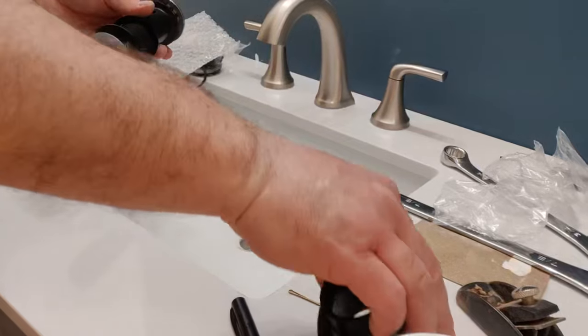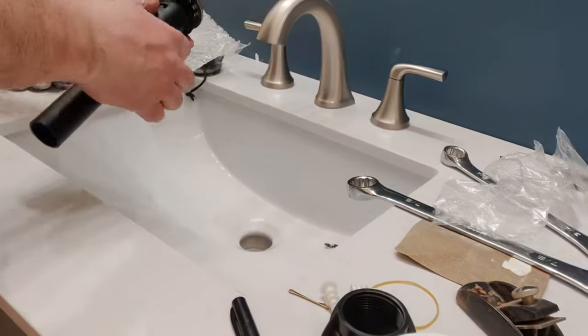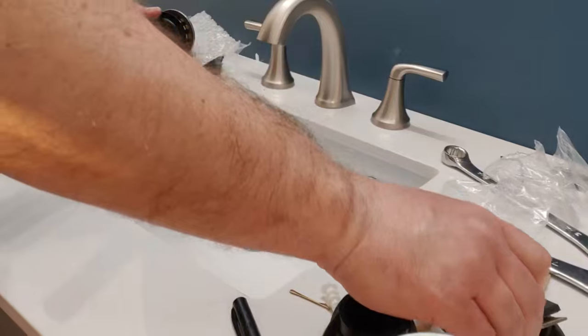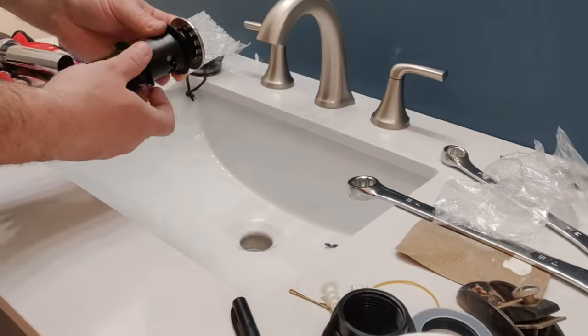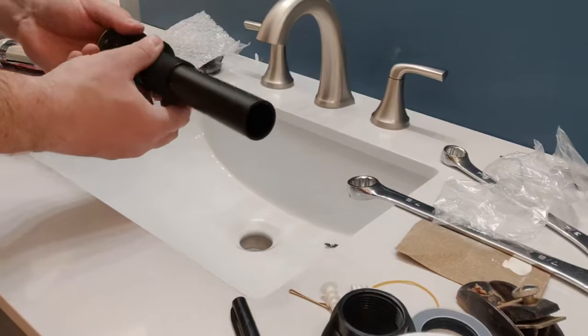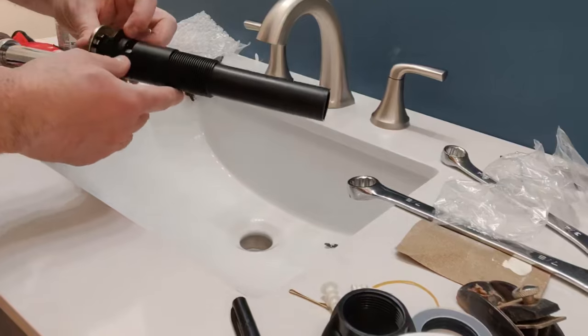Next we're going to install our drain. First we're going to remove all the pieces from the drain assembly except for the thin black washer at the top. That washer will sit between the bottom of the sink bowl and the drain assembly.